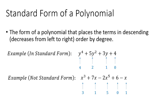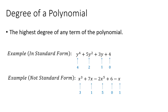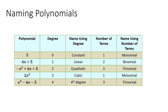In the next example, which is not in standard form: x cubed has degree 3, 7x has degree 1, negative 2x to the fifth has degree 5, 6 has degree 0, and negative x has degree 1. Those do not decrease from left to right, so it's not in standard form. To determine the degree of a polynomial, we look at the highest degree of any term. In the first example the degree is 4, and in the second example negative 2x to the fifth has degree 5, so the degree of that polynomial is 5.